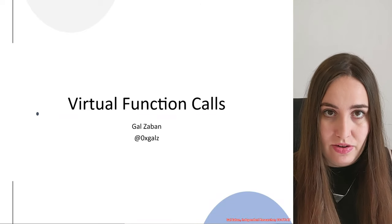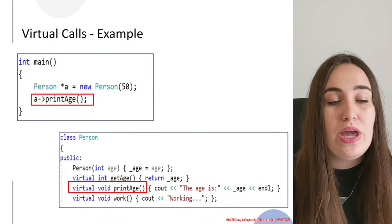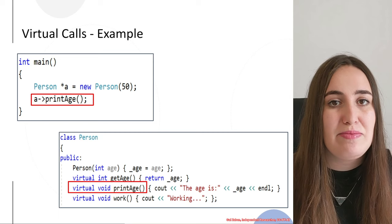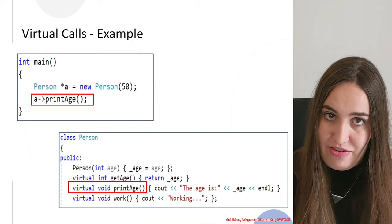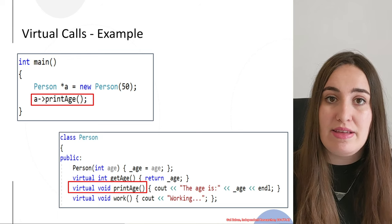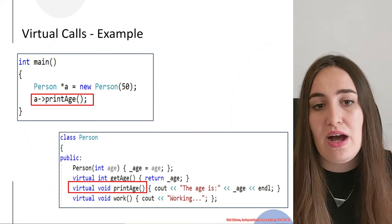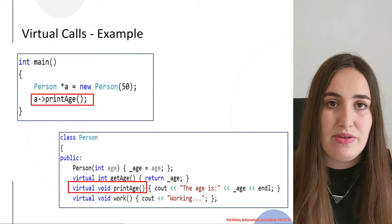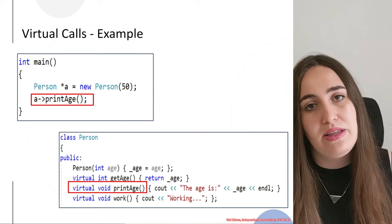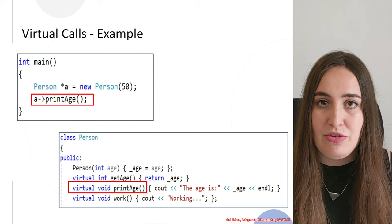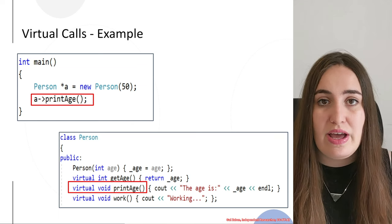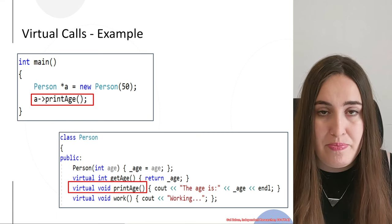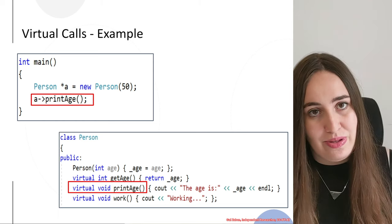This part will cover virtual function calls. We talked previously about virtual calls, vTables, specifically in the inheritance part and also in the object creation part. In this section we will cover more the practical side — how to deal with virtual calls, how they look in assembly, and we'll cover a demo with a real example where we statically go over the assembly and try to find the correct function that was called.